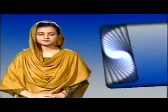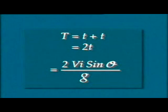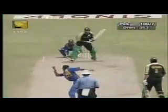The time to reach maximum height equals the time taken to fall from maximum height to the landing point. If the total time is T, then T = t + t. Substituting the value of t, the total time T = 2·vi·sinθ / g. In this case, the total time of flight will be 6 seconds.